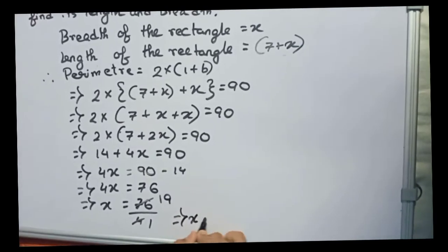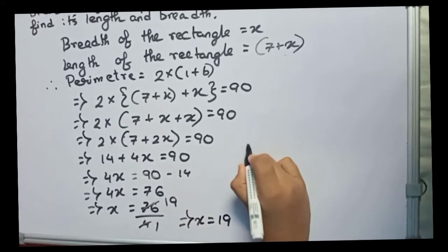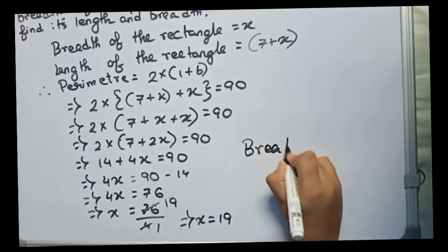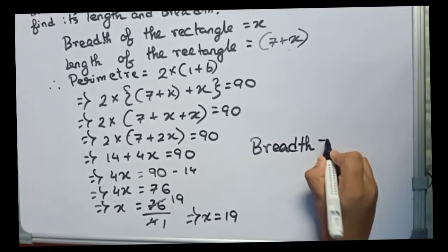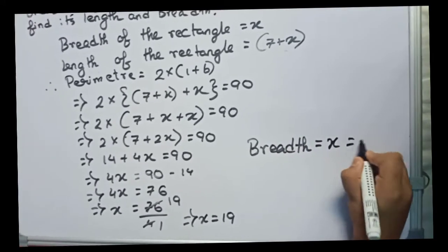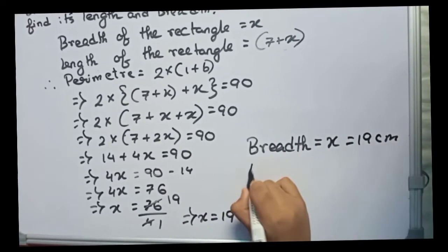So it becomes x equals 19. So now breadth equals x, that means it will be 19 centimeters only. Now the length: